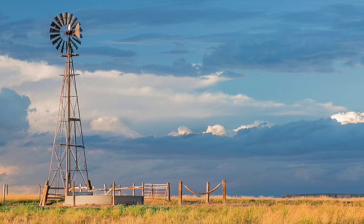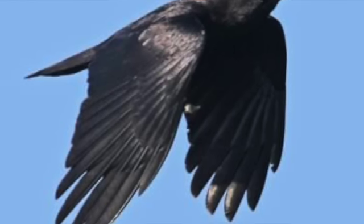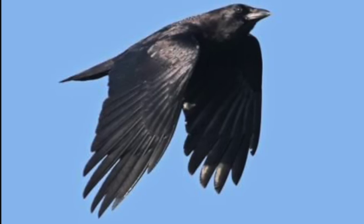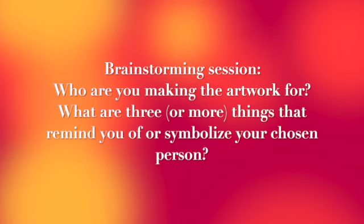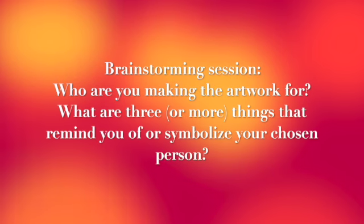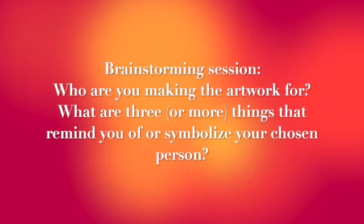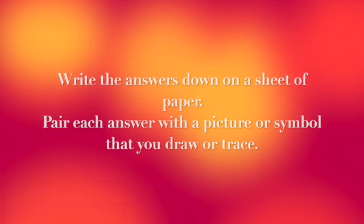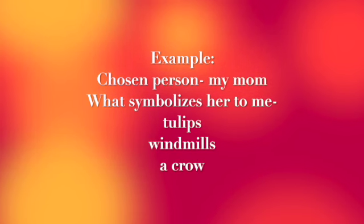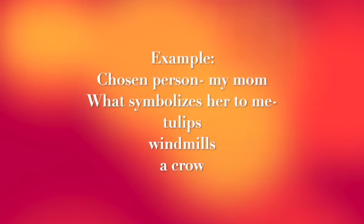With my mom, I chose tulips, a windmill, and a crow. I didn't end up using the crow in the final artwork, and I wanted to include this so you would know that you may choose some images or ideas, change your mind later, and create something totally different — which is just how it works when you're being creative. To get started, we need a brainstorming session. Grab a sheet of scratch paper and write down who you want to make this artwork about, and three or more things that remind you of that person, or words that symbolize that person. After you figure out your ideas, pair a picture with each one.